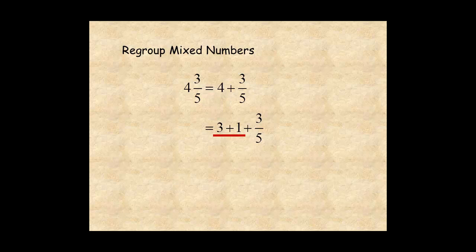Next, rewrite 1 as 5 over 5. Then, add the fractions. And you have 3 plus 8 fifths, which we write as a mixed number, 3 and 8 fifths.